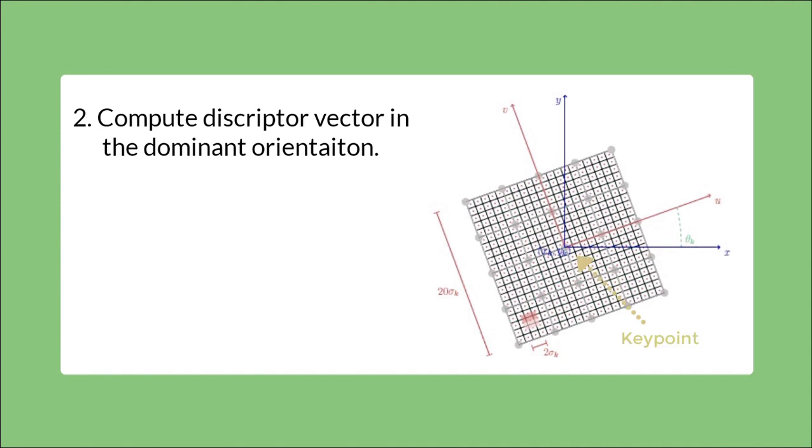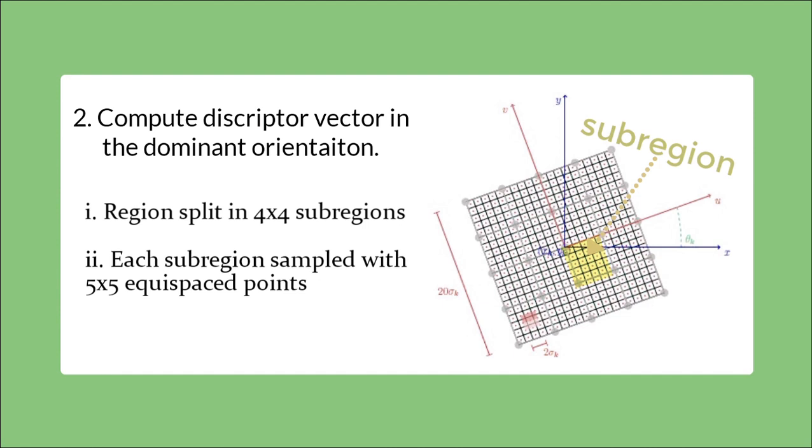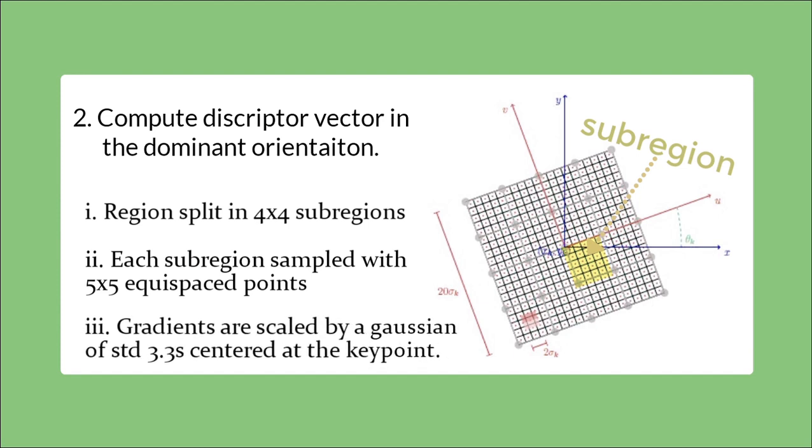After aligning the patch with its dominant gradient direction, its descriptive vector can be computed. For that, we consider a square window of size 20s around the key point. This window is split into 4x4 sub-regions to preserve the spatial information to some extent. Like in the previous step, 5x5 i.e. 25 equispaced points are sampled in every sub-region. This is done to make the features scale invariant. Gradients for these sampled points are scaled by a Gaussian of standard deviation 3.3s centered at the point of interest to increase its robustness towards geometric deformation and localization errors.